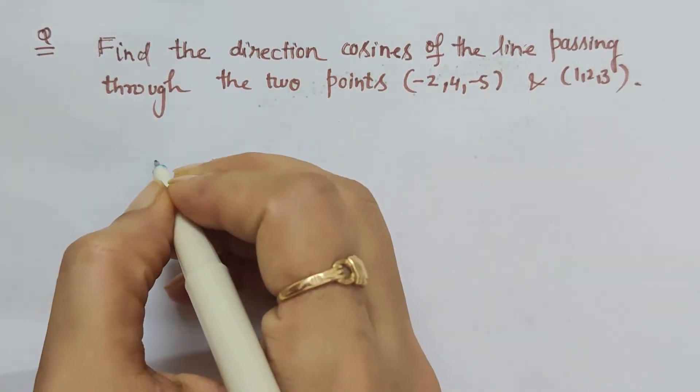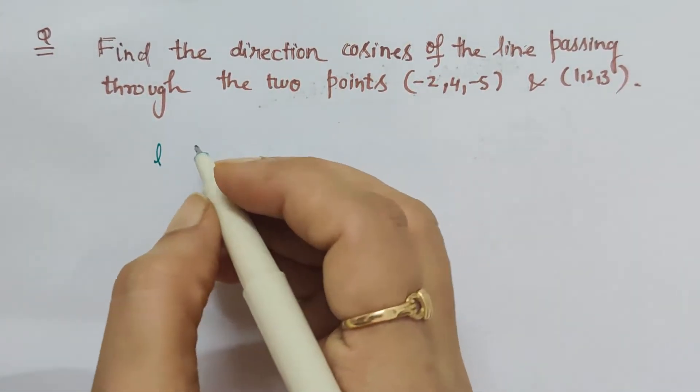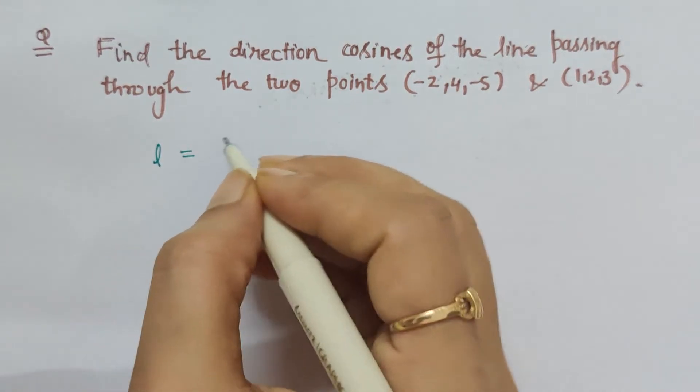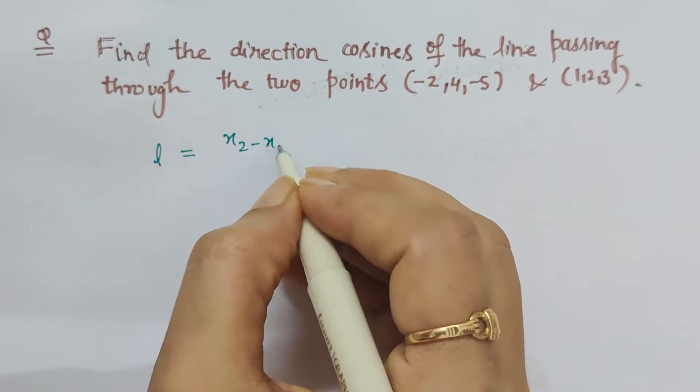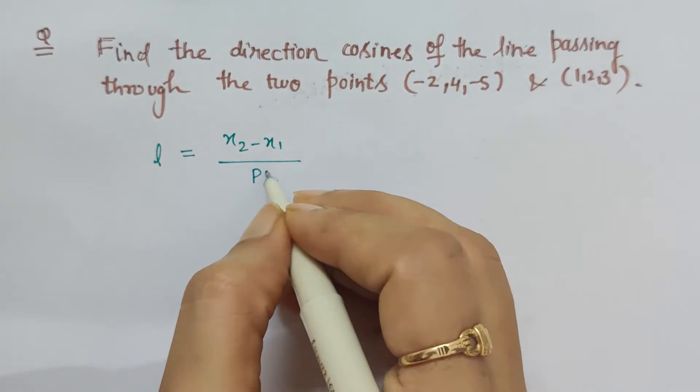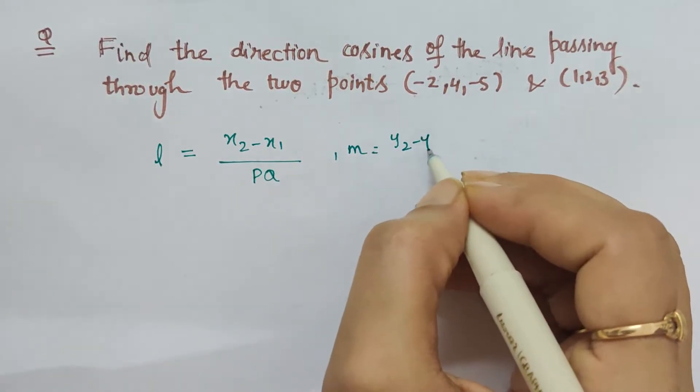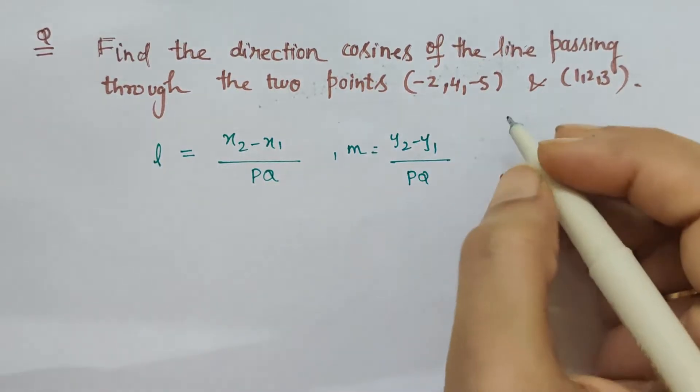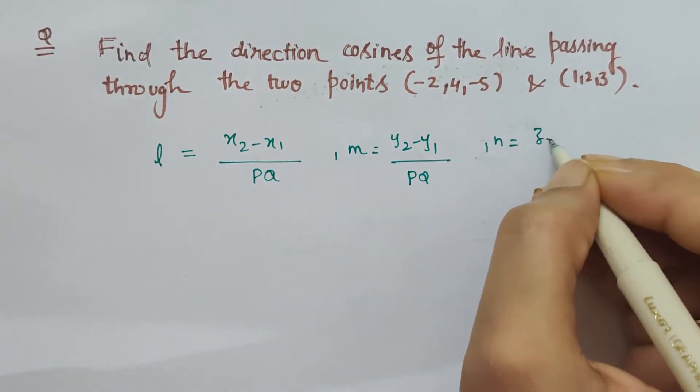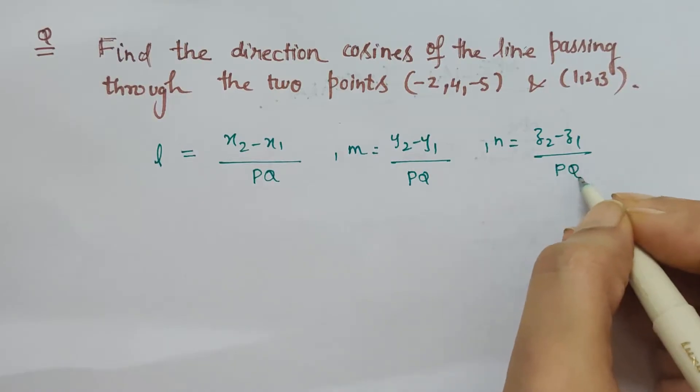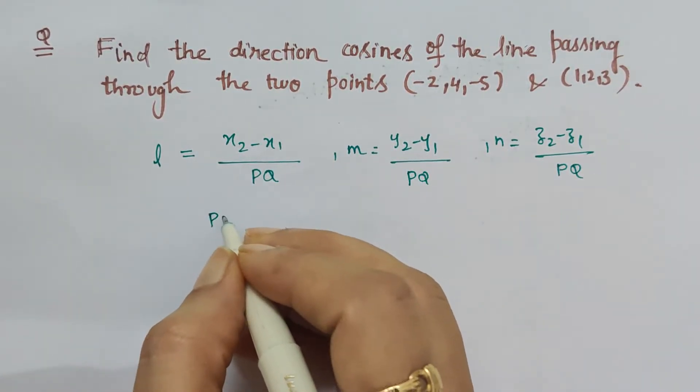l, m, and n are the symbols by which we represent direction cosine. So l will be given by x2 minus x1 upon pq, and m is y2 minus y1 upon pq, then n is z2 minus z1 upon pq.